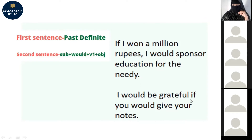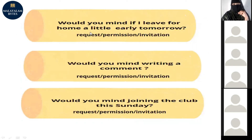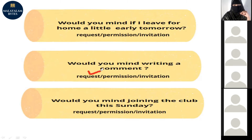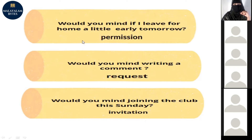For example: 'I would have awakened.' Now consider: 'Would you mind if I leave for home a little early tomorrow?' — is that a request for permission, a request, or an invitation? It's permission. 'Would you mind writing a comment?' — that's a request. 'Would you mind joining the club this Sunday?' — that's an invitation. So first is permission, second is request, third is invitation.